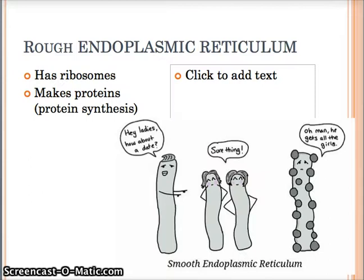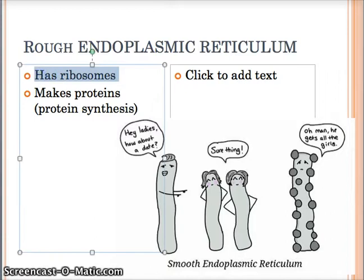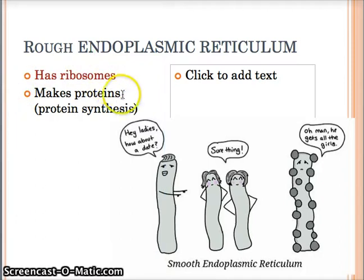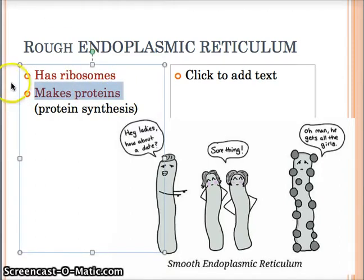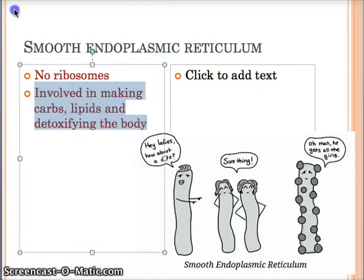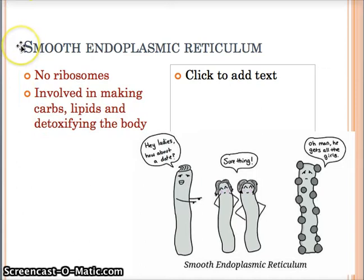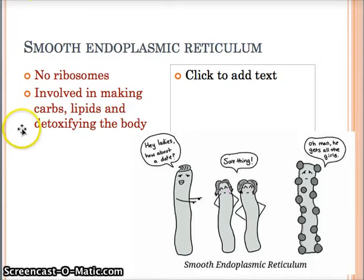Then we've got the rough endoplasmic reticulum - I'm just going to call it the rough ER. The reason it's rough is because it has ribosomes, and what the rough ER does is make proteins. Next we've got the smooth endoplasmic reticulum - the smooth one has no ribosomes. What this one does is make carbs and lipids, and it helps clean or detox your body - your liver has a lot of these. Both the smooth and rough ER are in plant and animal cells.